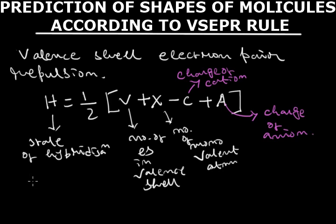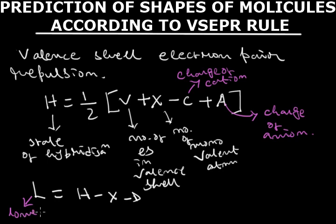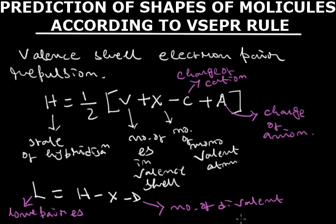Another formula is used to find the number of lone pair electrons. If L is the number of lone pair electrons, then L = H - X - D, where D is the number of divalent atoms. Using these two formulas, we can predict the shape of molecules easily.